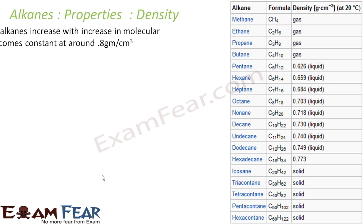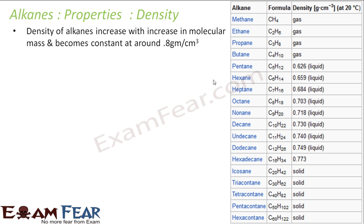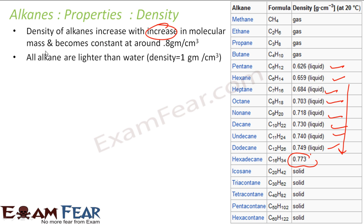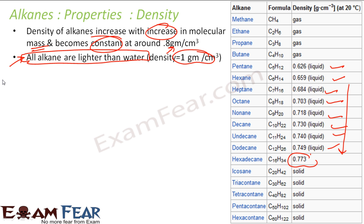Let's talk about the density of alkanes. The density increases with increase in molecular mass: 0.62, 0.65, 0.68, 0.70, 0.73, 0.74... it keeps increasing. But after about 0.8 g/cm³, the increase in density stops and becomes constant. The maximum density of alkanes is about 0.8 g/cm³. Since the density of water is 1 g/cm³, we can say that all alkanes are lighter than water.